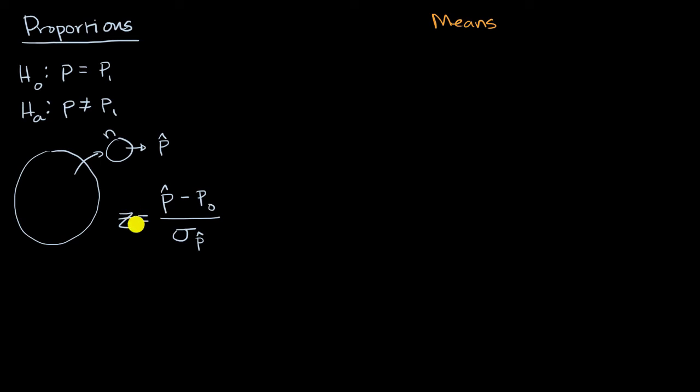And this works out well for proportions, because in proportions, I can figure out what this is. This is going to be equal to the square root of the assumed population proportion times one minus the assumed population proportion, all of that over n. And then I would use this z-statistic to figure out the p-value. And in this case, I would look at both tails of the distribution, because I care about how far I am either above or below the assumed population proportion.